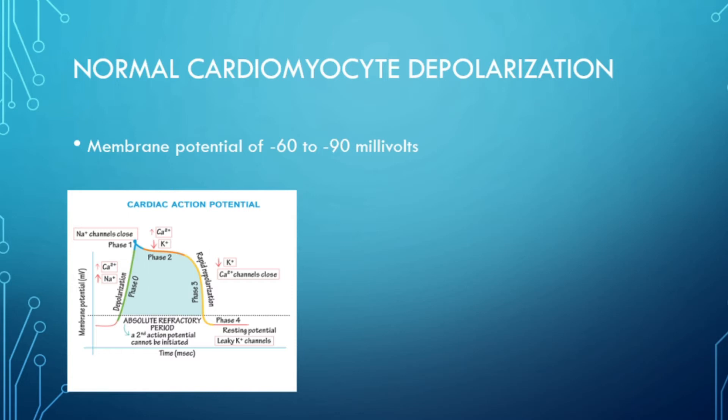The normal resting potential is approximately negative 160 to negative 190 millivolts, caused by a sodium-potassium pump. This pump creates an electrolyte gradient with potassium inside the cells and sodium outside. First, the sodium ions rush into the myocytes until the membrane potential hits around positive 20 millivolts, causing depolarization, at which point the sodium channels close.